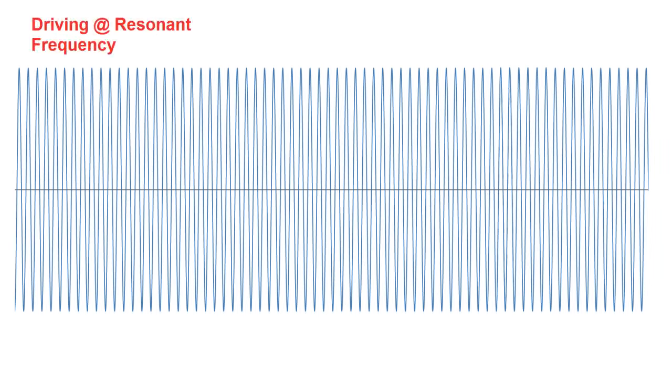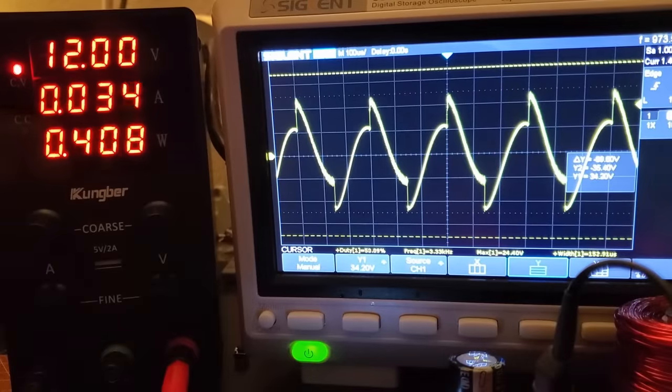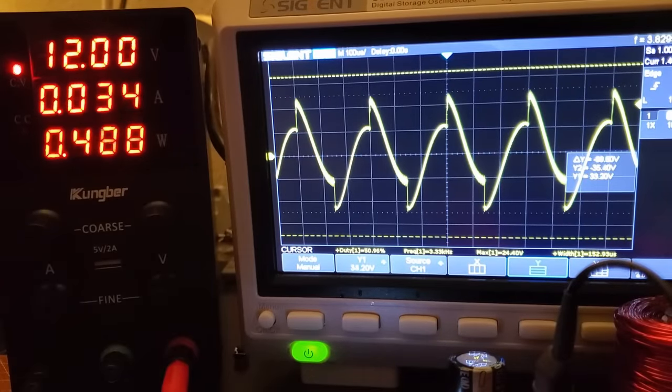It seemed like the obvious solution would be to connect the coil to a half-bridge driver and dial in the frequency until I hit resonance, but that didn't seem to work because I never got more than about three times VCC with this weird chopped sine wave waveform.